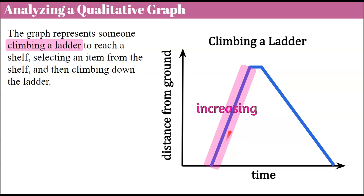If it were a line, it would have a positive slope. As we read left to right, it goes up, so it's increasing. This represents somebody climbing the ladder. We can also say they're climbing at a constant rate because it's the same slope — the speed isn't changing. This doesn't represent speed; it represents the distance from the ground, but that's changing at a constant rate over time.